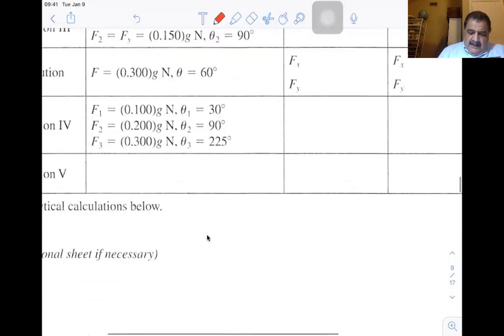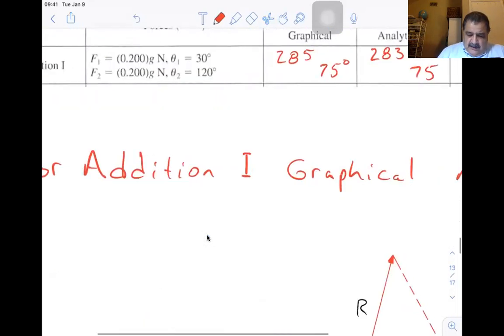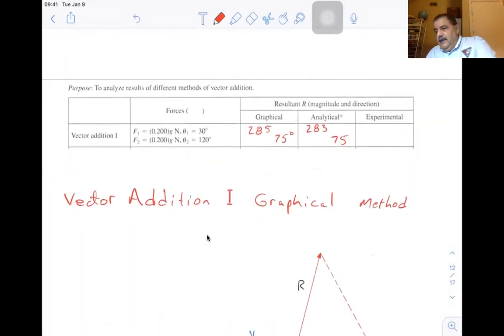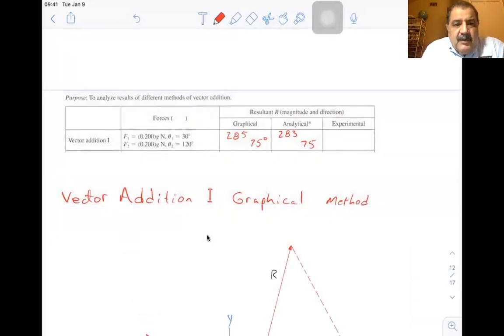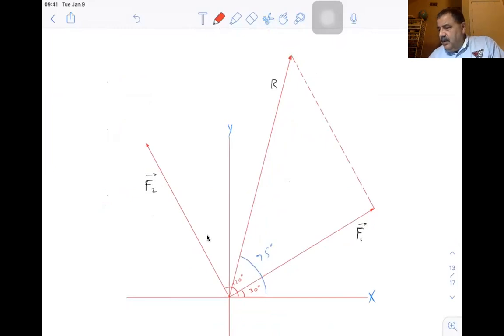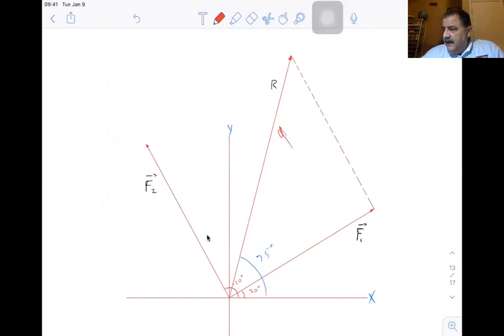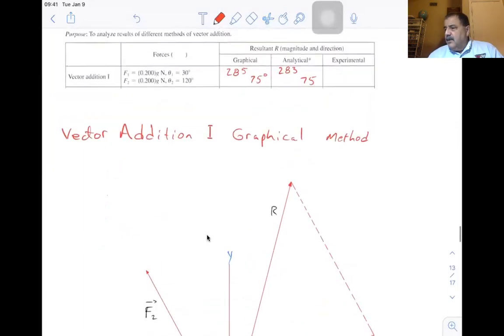The very first addition is F1 is 200 grams at 30 degrees and F2 is 200 grams at 120 degrees. So the graphical method, you just draw it out. This is F1 here. And this is F2. If you use the head to tail method, you can reproduce this one over here and using the head to tail method, you'll come up with the resultant R and you measure that, and measure the angle. That's why you need a protractor and you come up with 285 units at 75 degrees.